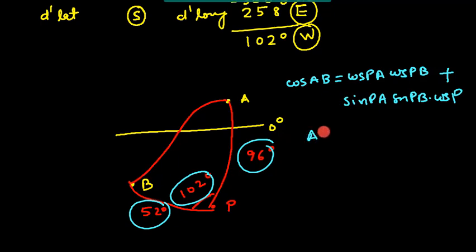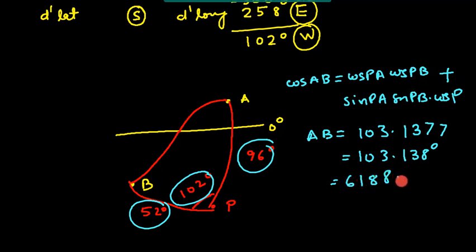So I get AB as 103.137768 or I can round off to 103.138 degrees. And if I multiply by 60 I get this value as 6188.3 nautical miles. That is the answer. That is the distance.